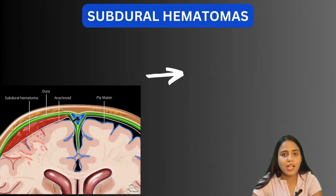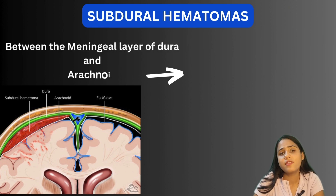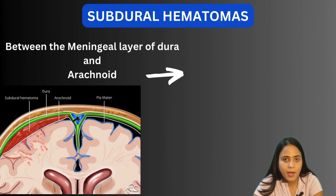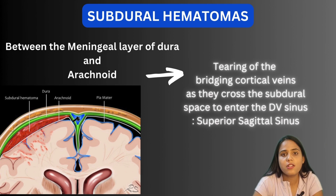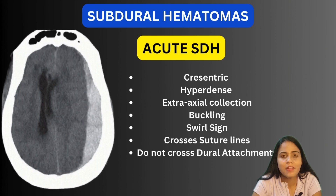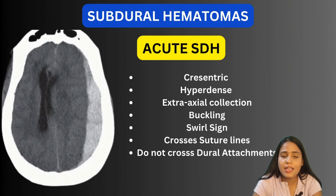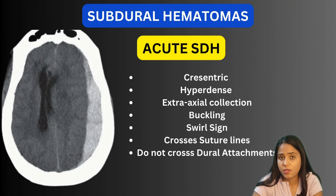Subdural hematomas occur when there is a collection of blood below the meningeal layer of the dura and above the arachnoid. The source of bleeding is usually tearing of the bridging cortical veins as they cross the subdural space to enter the dural venous sinuses — most often the superior sagittal sinus. On CT, we see a hyperdense crescent-shaped extra-axial collection along the left lateral convexity. Similar to EDH, we can also see buckling of the gray-white interface and the Swirl sign. Because SDHs are below the dura, they can cross suture lines but will not cross dural attachments.